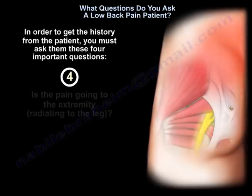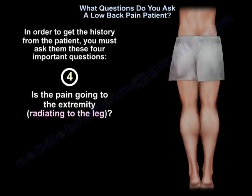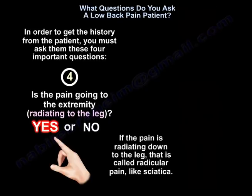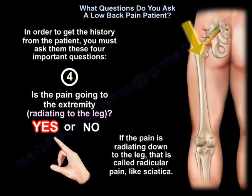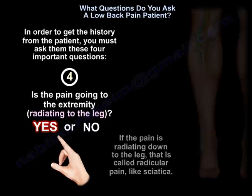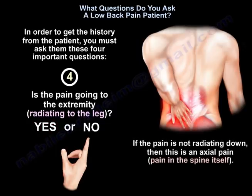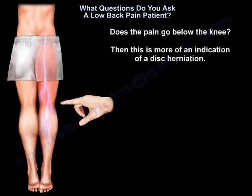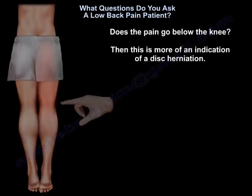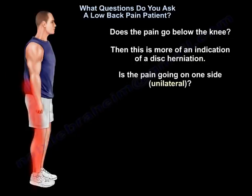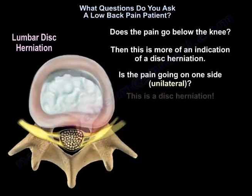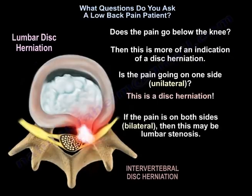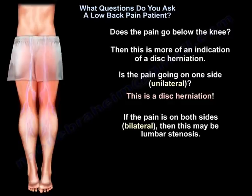The fourth question is: is the pain going to the extremity — is it radiating down to the leg or not? If the pain is radiating down to the leg, that's called radicular pain, like sciatica. If it is not radiating down, that's axial pain — pain in the spine itself. Does the pain go below the knee? That's more indication of a disc herniation. If the pain goes to one side, unilateral, that's a disc herniation. But if it is bilateral — both sides — that may be lumbar stenosis.